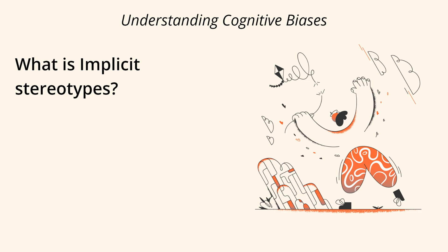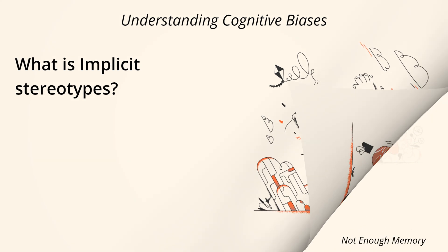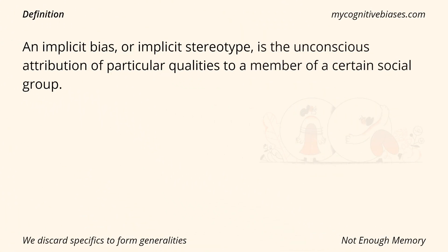What is implicit stereotypes? Definition. An implicit bias, or implicit stereotype, is the unconscious attribution of particular qualities to a member of a certain social group.